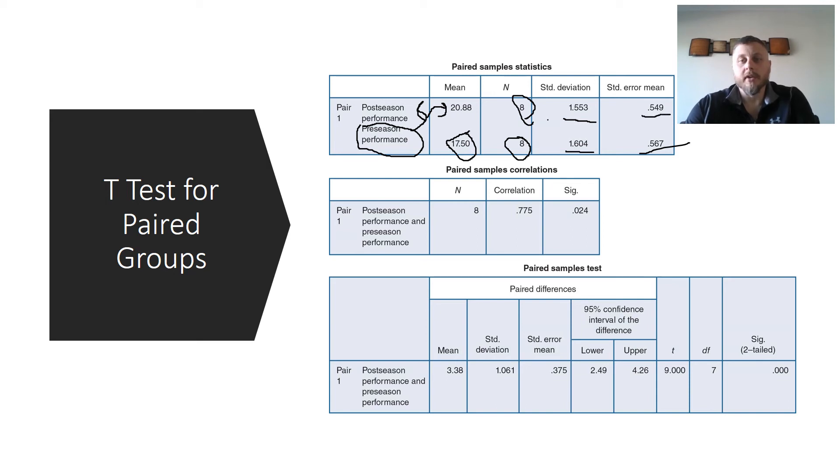So pair one, post-season and pre-season performance, eight people, correlations, and then the alpha level was set to 0.05 or 5%. So boom, we already have a significant sample reference.